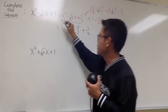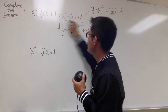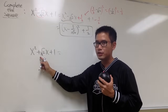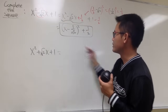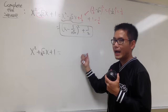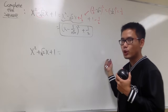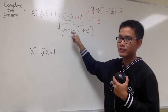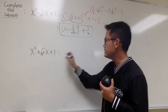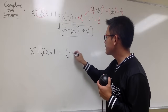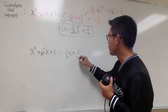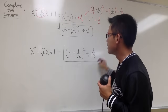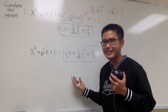So this is the completed square version of that. For the second factor, it's the same thing but with a plus sign, so we still add 1 half and subtract 1 half, and the result is x plus 1 over square root of 2, squared, plus 1 half.